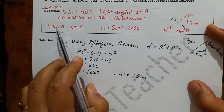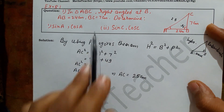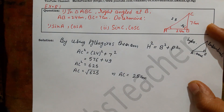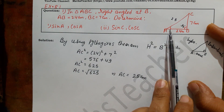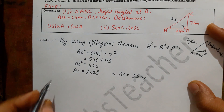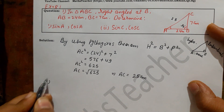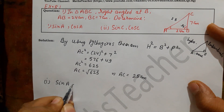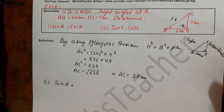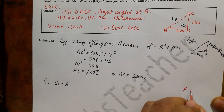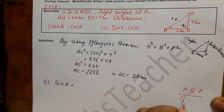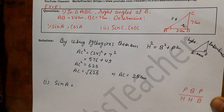Now in the first part we have to find sin A and cos A. When we find any angle value it should always be made with that angle on the base. Here angle A is at the base, so we solve from there. For sin A, remember the easy way using P, H, B: sin theta equals P upon H, that is perpendicular upon hypotenuse.